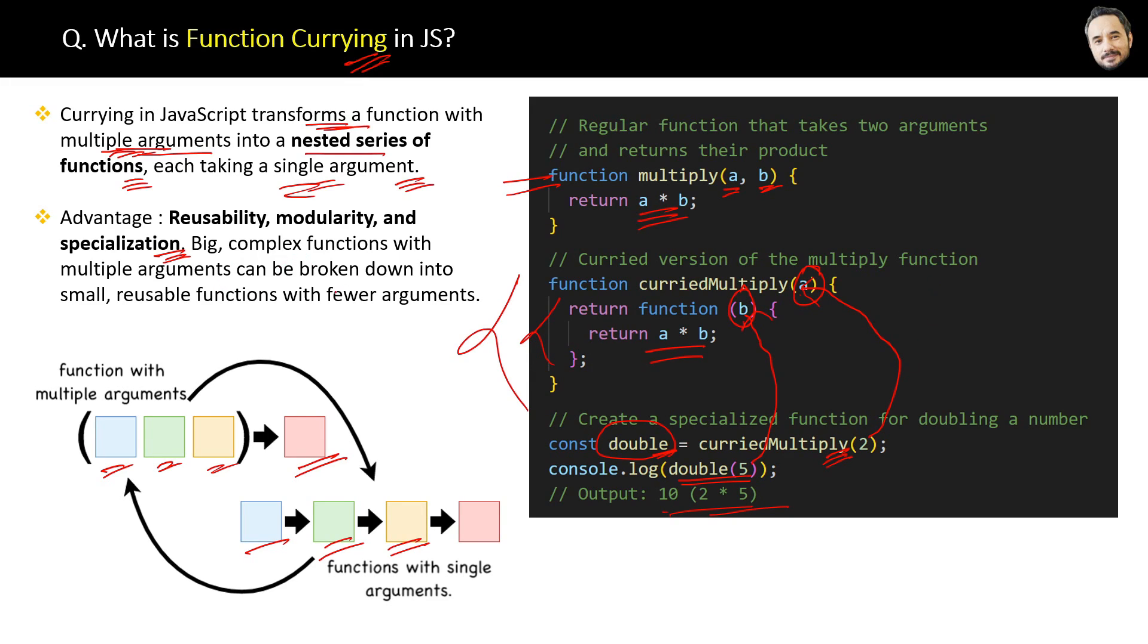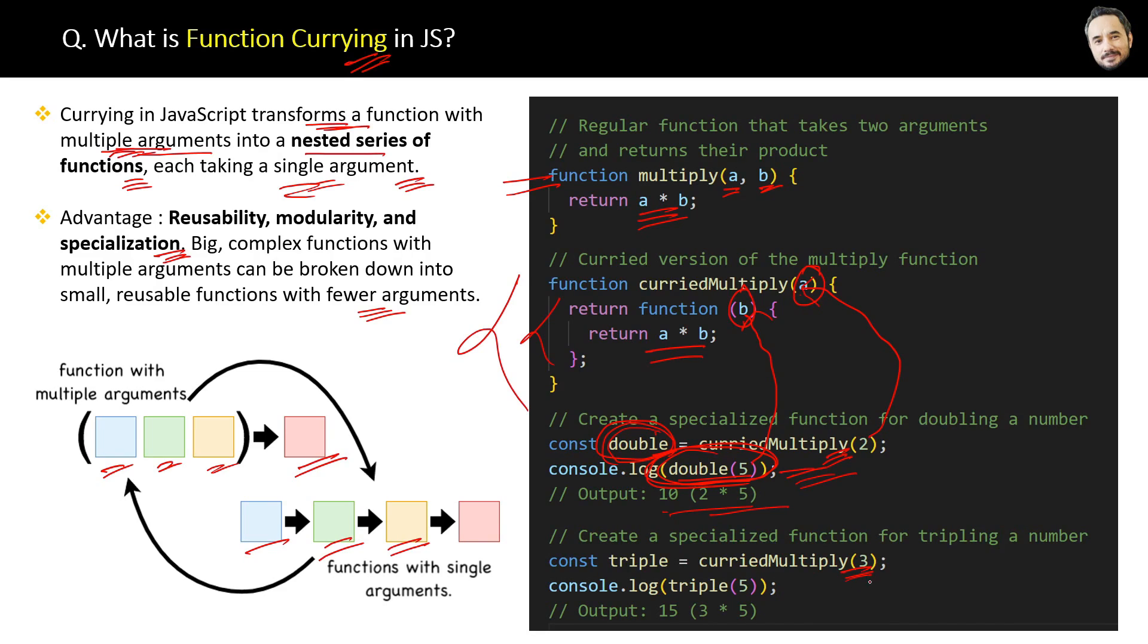For example, in this code you can see we can call this variable double like a function multiple times anywhere in our application. Similarly we can use the same curried multiply method and create a variable triple which can again be used like a reusable function anywhere. So now curried multiply function is also being used at multiple places multiple times.